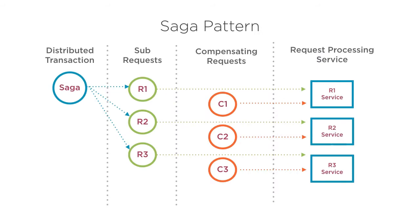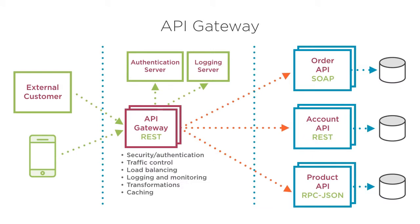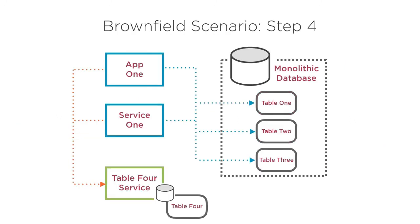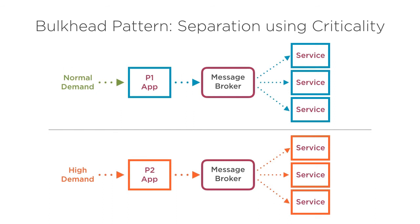The next stage after understanding these design principles is to implement them using an effective tool set. However, what is an effective tool set for our microservices architecture? An effective tool set needs to consist of practical design patterns and practices that help achieve our microservices architecture and design principles.